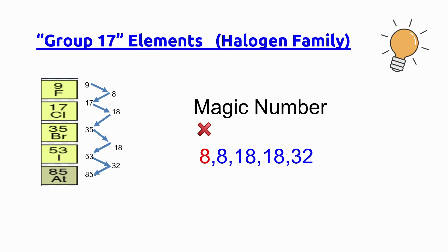Now let's practice writing the atomic numbers for group 17 elements, also known as the halogen family, with the help of magic numbers. The atomic number for fluorine is 9. 9 plus 8 gives 17, the atomic number for chlorine. 17 plus 18 gives 35, the atomic number for bromine. 35 plus 18 gives 53, the atomic number for iodine. 53 plus 32 gives 85.